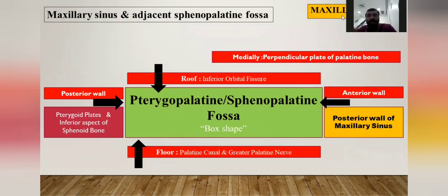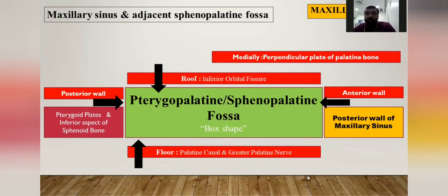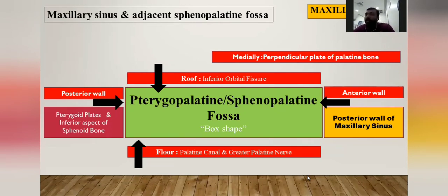Adjacent to the maxillary sinus lies the pterygopalatine fossa, which is of significant anatomical importance. The posterior wall of the maxillary sinus contributes to the anterior wall of the pterygopalatine fossa. Within this fossa are located the pterygopalatine ganglion, terminal branches of the maxillary artery, emissary veins, the maxillary nerve, the nerve of the pterygoid canal, and accumulated fat — useful to remember for examinations.